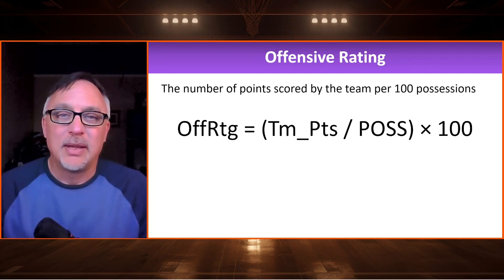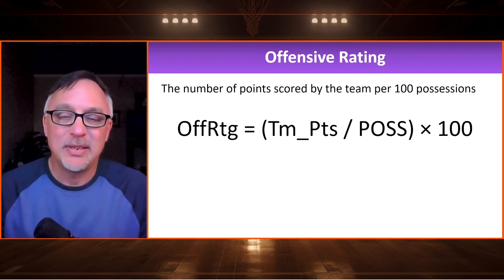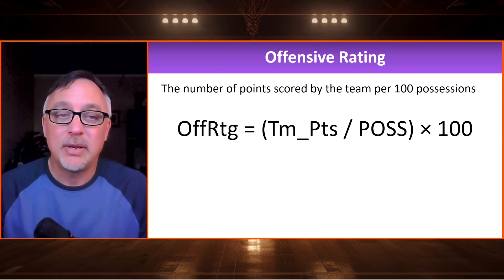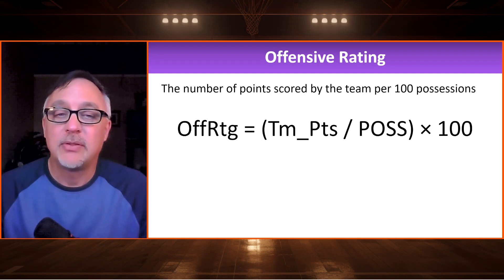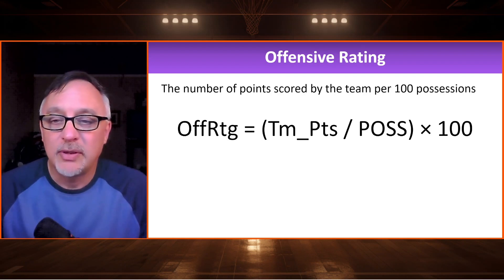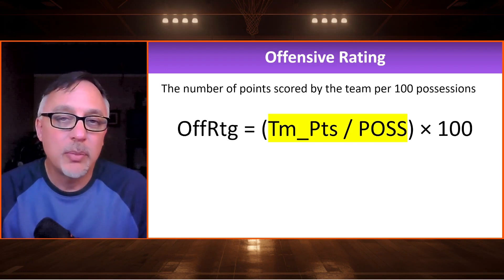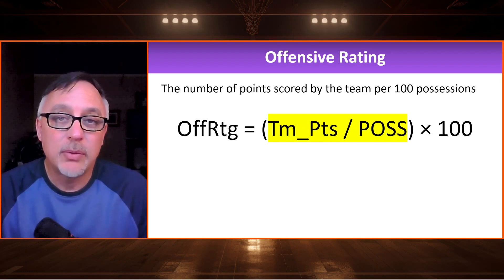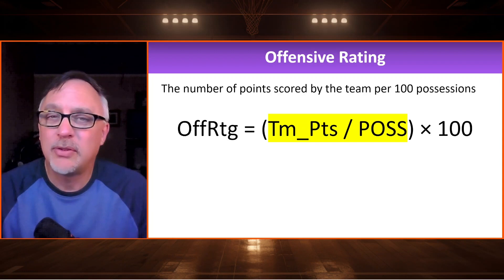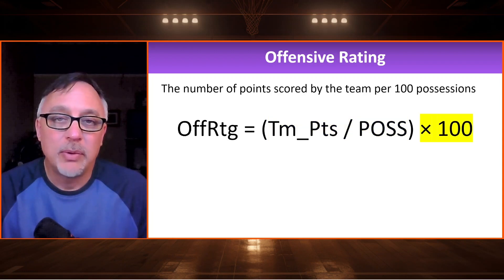Let's look at the first one here — offensive rating. As I always like to say, the team that scores the most points is going to win the game. The offensive rating is the number of points scored by a team per 100 possessions. When we look at the data, we look at it from the perspective of a particular team. TM is the team we're considering, POSS is the number of possessions in the game for that team, and we simply multiply by 100. That's basically how many points a team will score per possession — it's just over one typically — so we multiply by 100 to get the per-100-possessions figure.